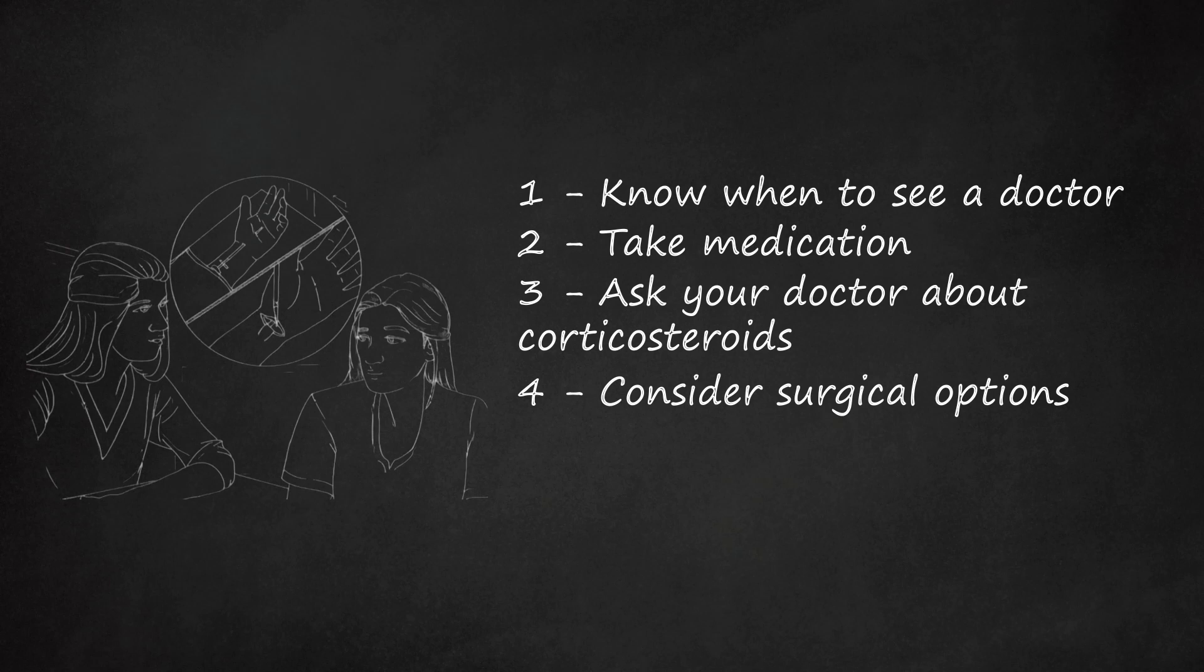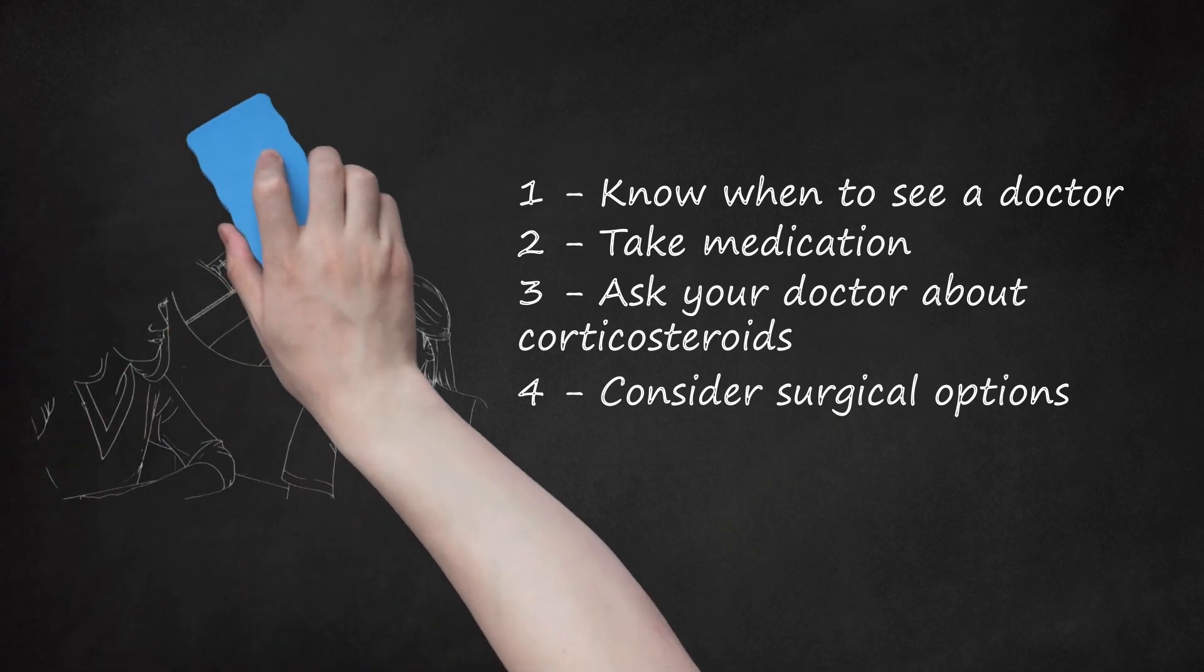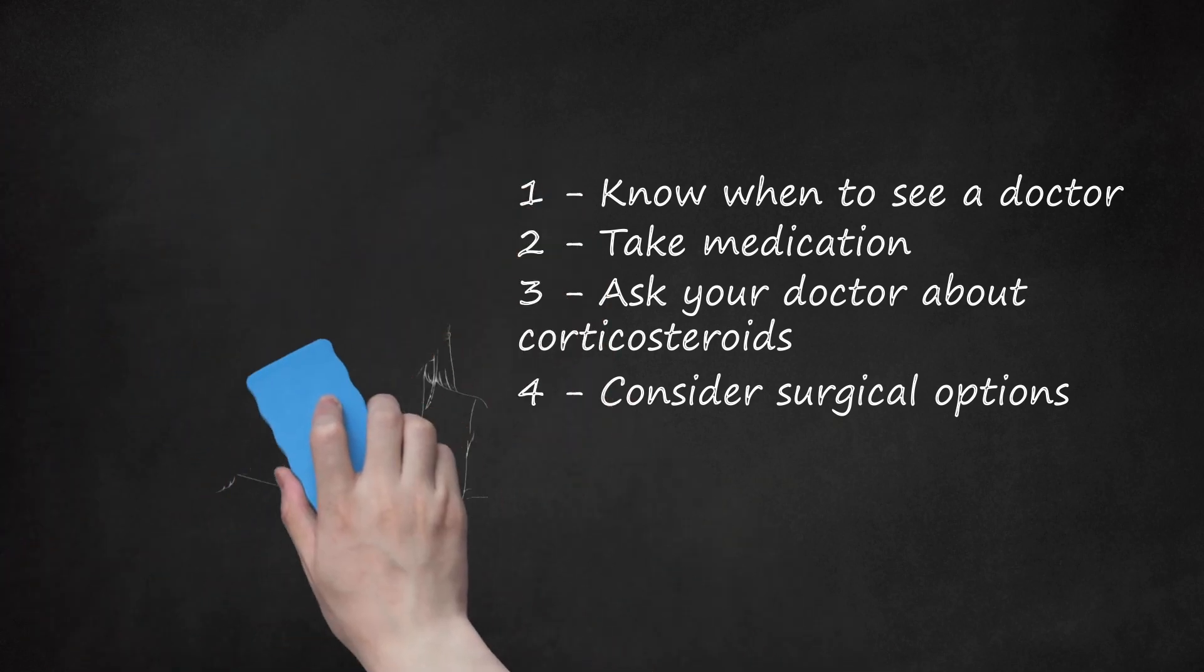Open surgery involves a surgeon making a comparatively bigger incision in the palm of the hand. The surgeon then enters the wrist through the incision and severs the ligament to free the nerve. The procedure is similar to endoscopic surgery, but it is much more invasive, and consequently it may take longer to heal.